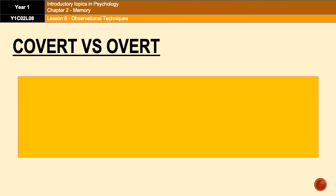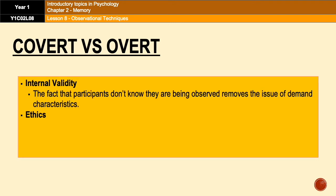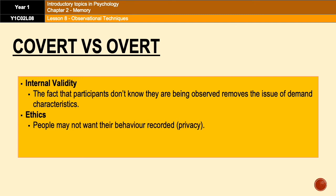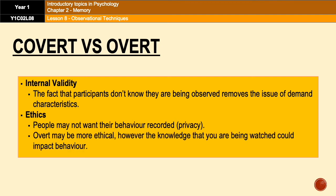Moving on to covert versus overt observations, focusing on internal validity and ethics. Covert observations have good internal validity because participants being unaware they're being observed removes the issue of demand characteristics and participant reactivity, meaning participants act naturally. However, ethics could be an issue in covert observations because even though behavior occurs in a public place, it doesn't necessarily mean people want it observed and recorded — for example, how much someone spends on a shopping trip is their own private business. Overt observations don't have this issue as much since people have given informed consent, but that means their behavior could be impacted, which reduces internal validity.